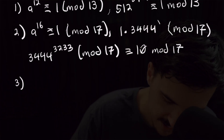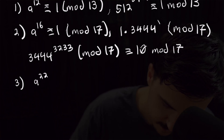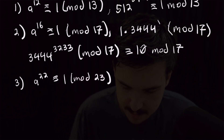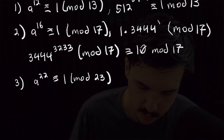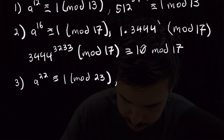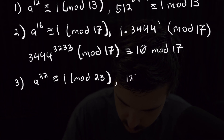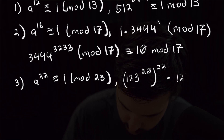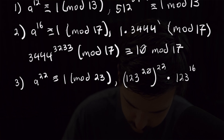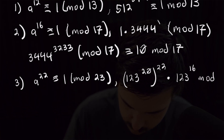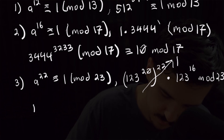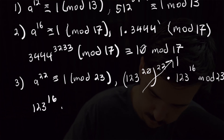Moving on to our third one. By Fermat's Little Theorem, we know that a to the 22nd is congruent to 1 mod 23. We know that 22 times 20 is equal to 440, so we can rewrite 123 to the 456 as 123 to the 20th power, all to the 22nd power, times 123 to the 16th power, reduced mod 23. We know that that first term goes to 1, so that leaves us with 123 to the 16th that we want to reduce mod 23.